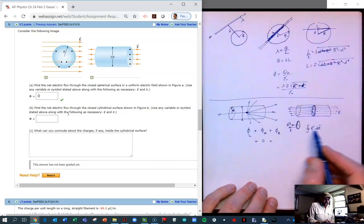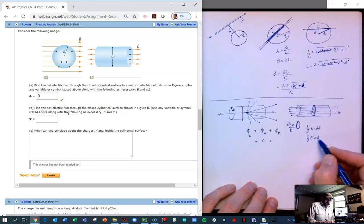And so the electric field is constant everywhere, and E dot dA, they're parallel, so E dot dA simply becomes E times dA. And because the electric field is constant, we can pull it out of the equation.